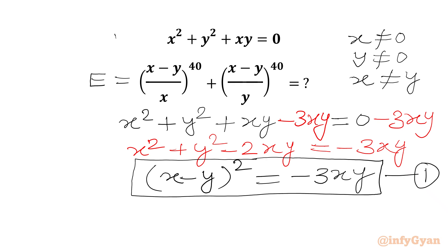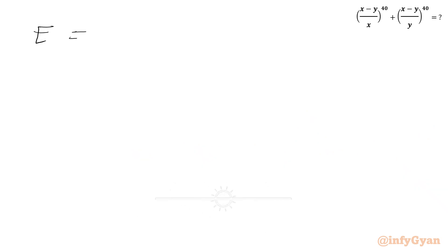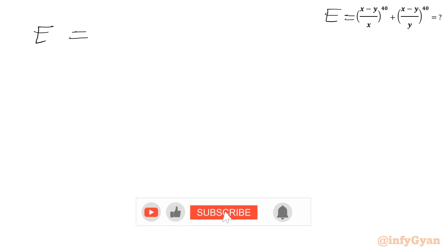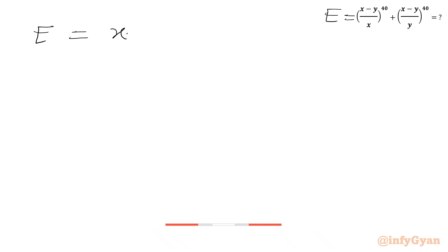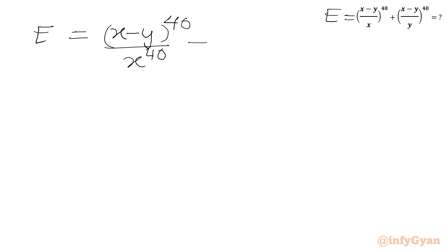Now I will focus on the numerator only, as we have (x minus y) whole square hidden inside. Let me write expression E, splitting the numerator and denominator with their exponents. So we write (x minus y) whole power 40 over x power 40, plus (x minus y) whole power 40 over y power 40.